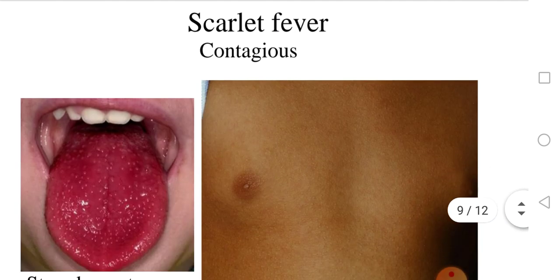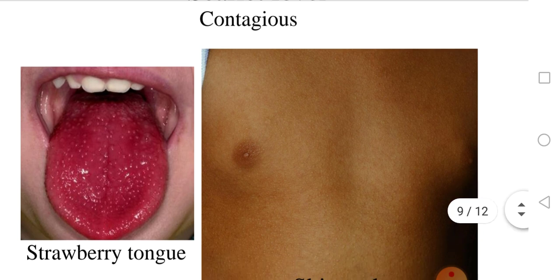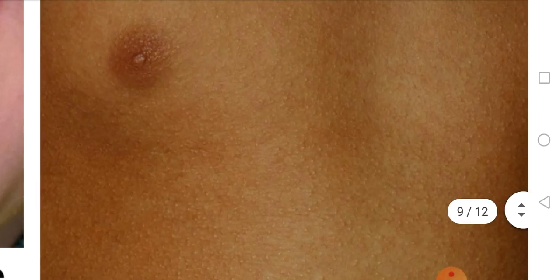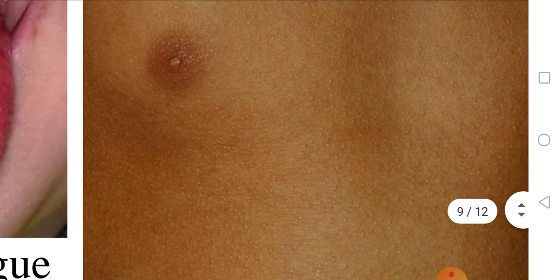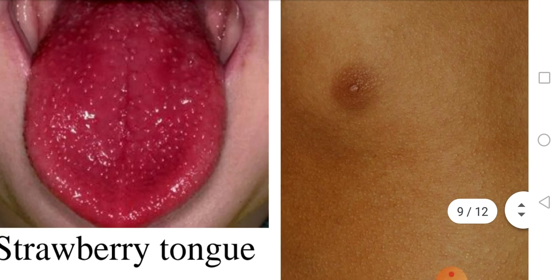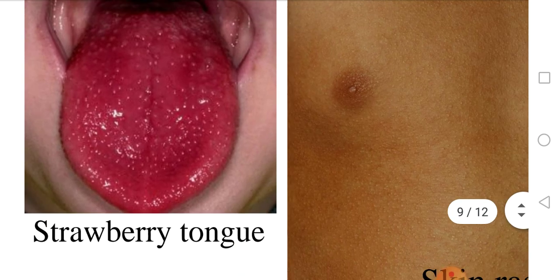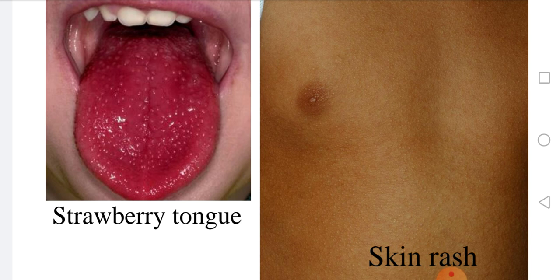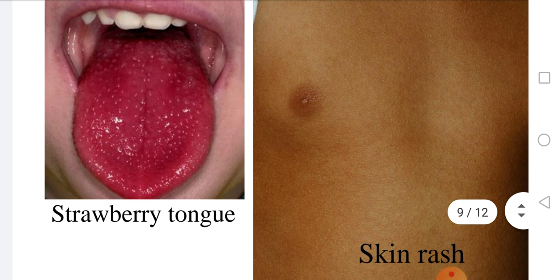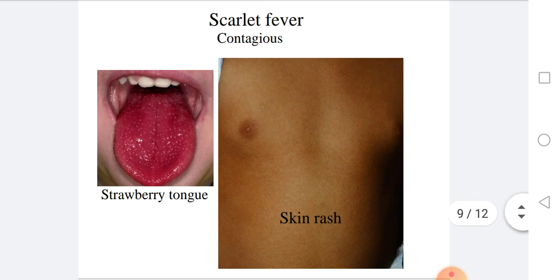Scarlet fever is toxin-mediated by the pyrogenic exotoxins as shown in the table. The characteristic features include a skin rash and a very red tongue known as the strawberry tongue. Scarlet fever is extremely contagious.